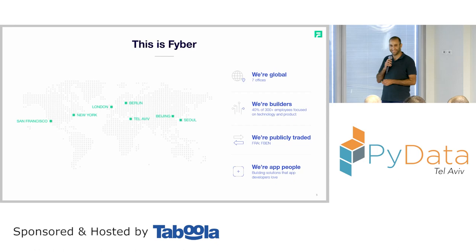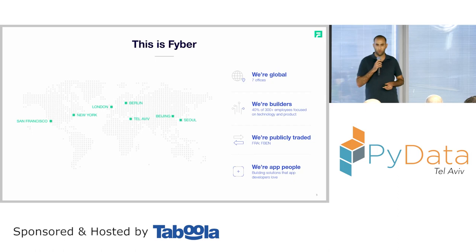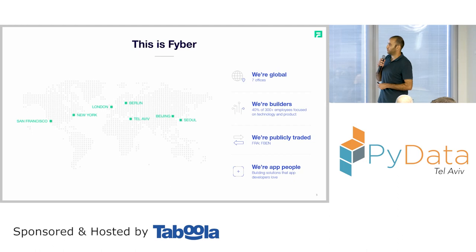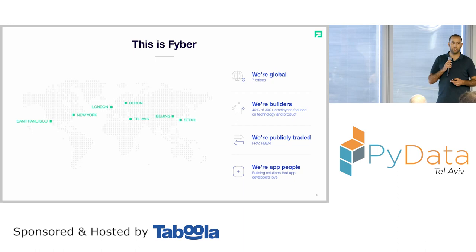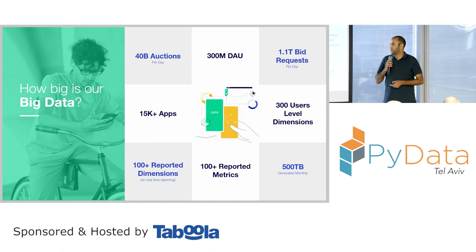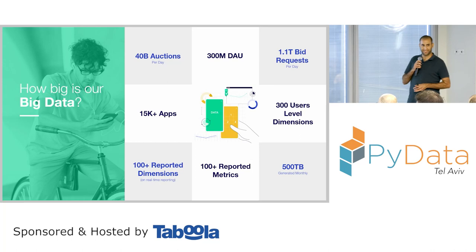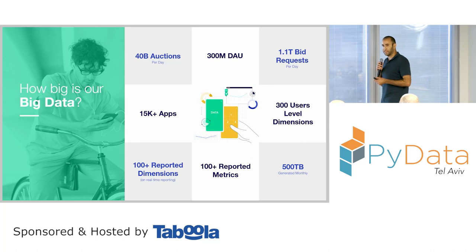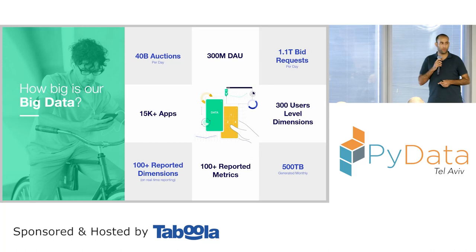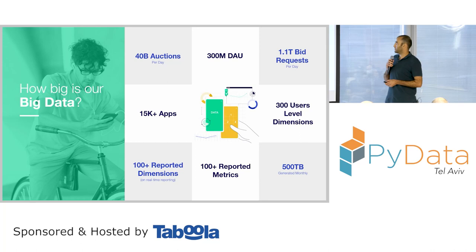Fiber is an ad tech company dealing in the space of mobile mostly, as opposed to, for example, Taboola which works mostly on web. We're dealing in the space between publishers — which are app developers — and advertisers, connecting between both via RTB, real-time bidding. We're a global company, very tech-heavy in R&D and product. We're talking about 30 billion auctions per day. Thousands of applications are integrated via our platform, and we have many dimensions and metrics to slice and dice the data. Tons of user-level dimensions and bid requests are processed every day, so the data is pretty huge.